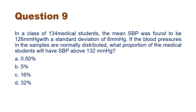Using similar logic, in a class of 134 medical students the mean systolic blood pressure was 126 with a standard deviation of 6. If blood pressure is normally distributed, what proportion will have systolic BP above 132 mmHg? Mean plus SD equals 126 plus 6 equals 132. So again they are asking what percentage is above mean plus one standard deviation, which is directly 16 percent.